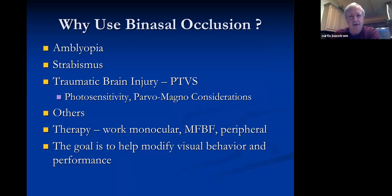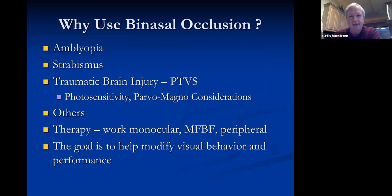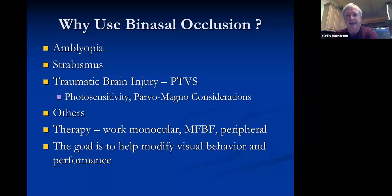Why use binasal occlusion? For amblyopia, if you're doing unilateral therapy, full occlusion causes loss of peripheral vision which patients don't like. But with a partial occlusion on one side, anytime they look to that side they use the amblyopic eye, meaning they're getting treatment throughout the whole day. You can also use it for strabismus and for traumatic brain injury. The width and characteristics are always different depending on the condition.